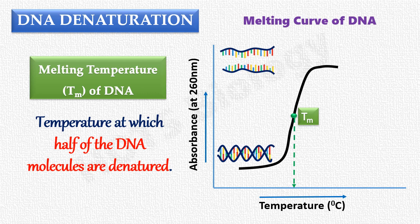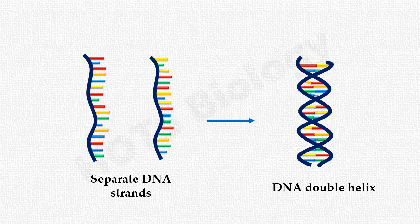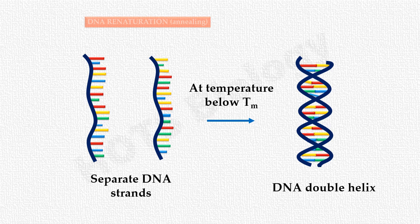Besides denaturation, another feature of the DNA double helix is that the separated complementary strands of DNA can spontaneously re-associate to form a double helix. This happens when the temperature of the DNA solution is lowered below its melting temperature. This phenomenon is known as renaturation, or annealing.